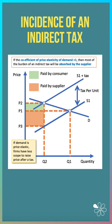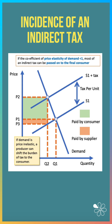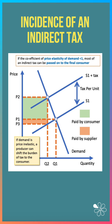They have to absorb most of the tax, whereas if demand is price inelastic a producer can shift the burden — pass it on, or most of it in this case, to the consumer by raising the final price.